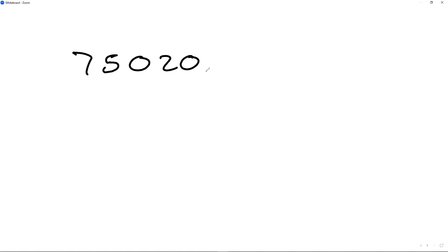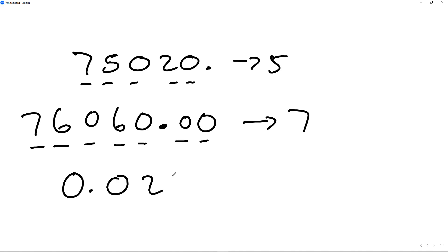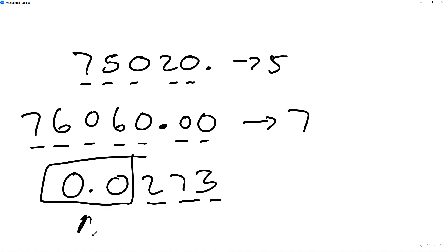Let's look at more examples. If I've got 725020.0, that's one, two, three, four, five significant figures. If I've got 76060.00, the decimal exists so we count all of them: one, two, three, four, five, six, seven — seven significant figures. If I've got 0.0273, those three values are significant but the leading zeros are not. So when zeros come before a non-zero number after a decimal, they're not significant — giving us three significant figures.